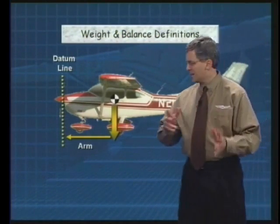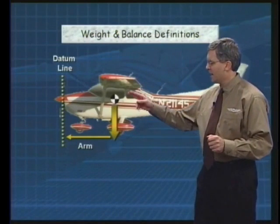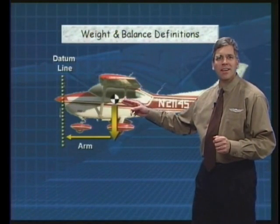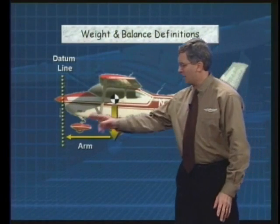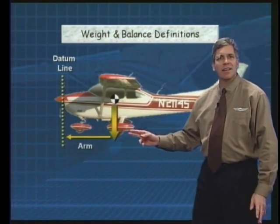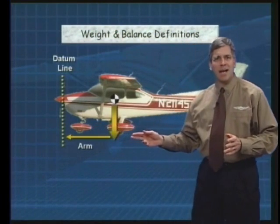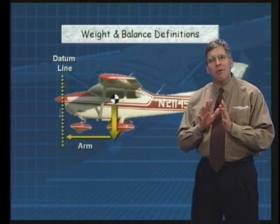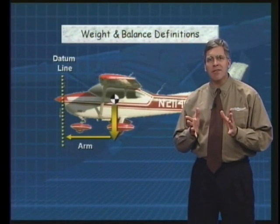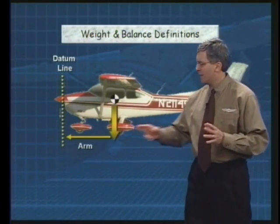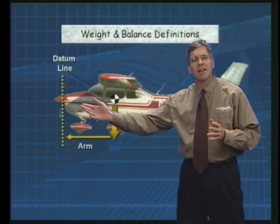Take a look at this graphic right here. Imagine that the pilot is sitting right at the center of gravity. The arm is the distance from the datum line to the pilot, measured in inches aft of the datum line. If all values are positive, this means that the engineers have specified that the datum line will be at the nose of the aircraft or even in front of it. Often the arm will be given to you in the form of a loading graph or table.